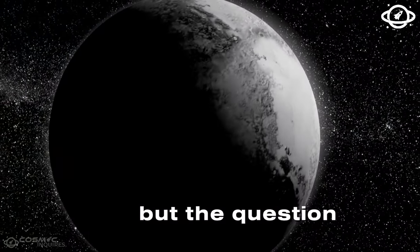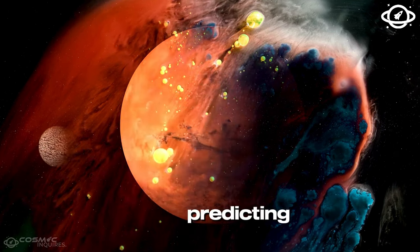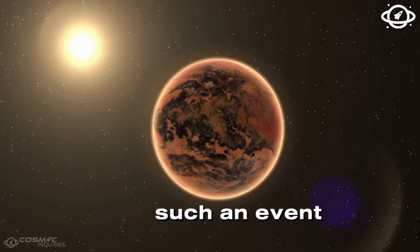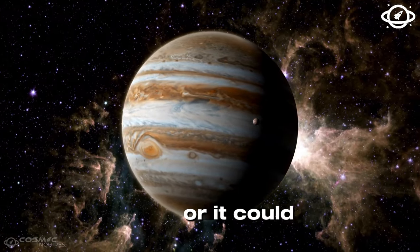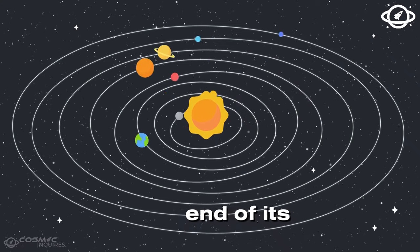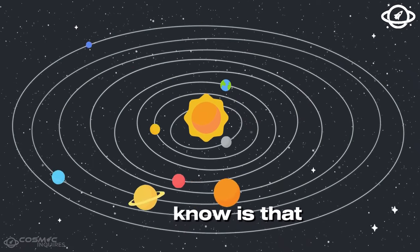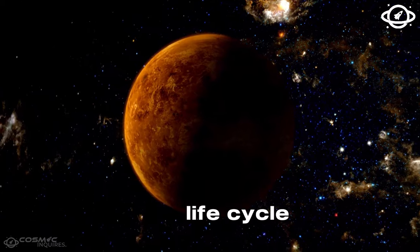But the question on everyone's mind now is, when will Betelgeuse go supernova? Predicting the exact timing of such an event is extremely challenging. It could happen tomorrow, or it could be another 100,000 years before Betelgeuse reaches the end of its life. What we do know is that as a red supergiant, Betelgeuse is nearing the end of its stellar life cycle.